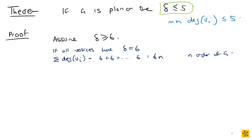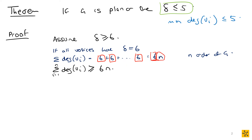For any graph where delta is greater than or equal to six, the sum of the degrees of the vertices is greater than or equal to 6n. Six is the absolute minimum all vertices can be, so the general case gives us the sum of degrees ≥ 6n.